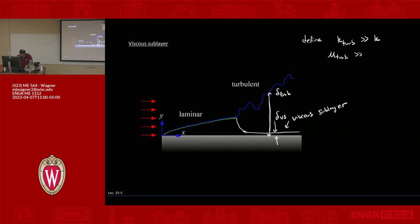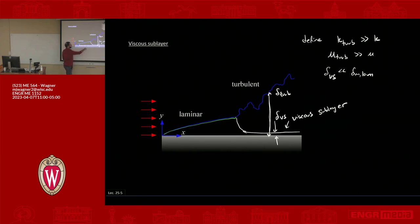We also note that Delta_M turbulent is typically much smaller than Delta_M laminar, and the viscous sublayer thickness Delta_VS is much smaller than Delta_M laminar, which is in turn much smaller than Delta_M turbulent. Those are just some key takeaways.